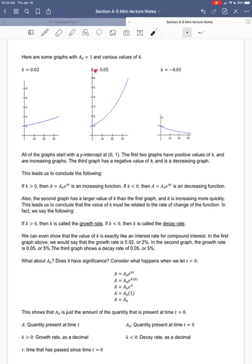Also, the second graph here has a larger value of k than the first graph, and it's increasing more quickly. That leads us to conclude that this value of k must somehow be related to the idea of the rate of change of this function. How quickly is the function changing? In fact, we can say this. If k is greater than 0, we call k the growth rate. If k is less than 0, it's called the decay rate for this exponential model.